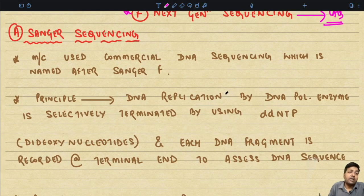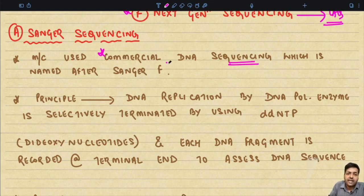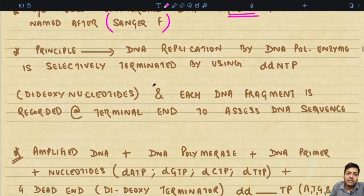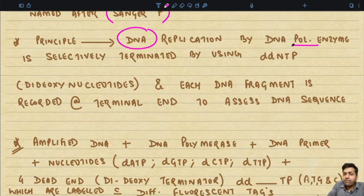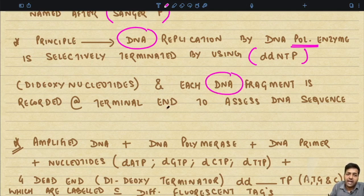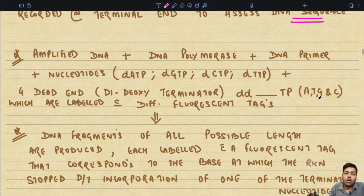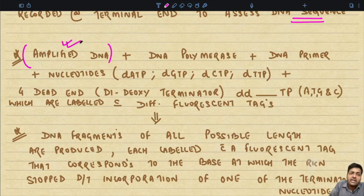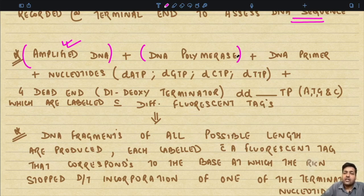Sanger sequencing is the most commonly used commercial DNA sequencing, named after scientist Sanger F who discovered it. The principle: DNA replication by DNA polymerase enzyme is selectively terminated using dideoxynucleotides. Each DNA fragment is recorded at the terminal end to assess the DNA sequence. The basic contents required: first, amplified DNA from PCR as substrate; DNA polymerase to elongate the chain; a DNA primer; and the building blocks — dATP, adenine, guanosine, cytosine, thymidine.